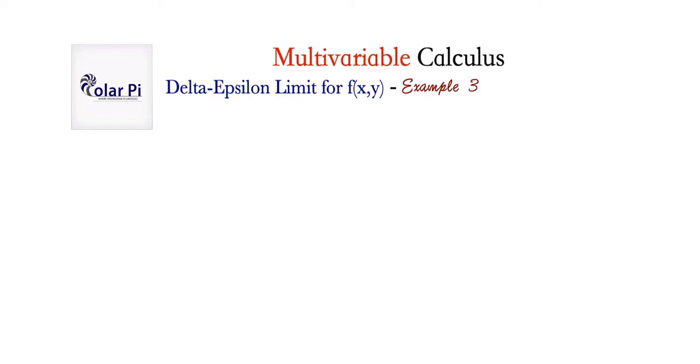Then in example 1, we encountered three different limits, all of which did not exist. So there we learned techniques for figuring out whether or not a limit exists for a function of two variables. And then in example 2, the previous video, we encountered our first delta-epsilon limit proof for functions of two variables, because there the limit did exist, and so we had to write a delta-epsilon limit proof.